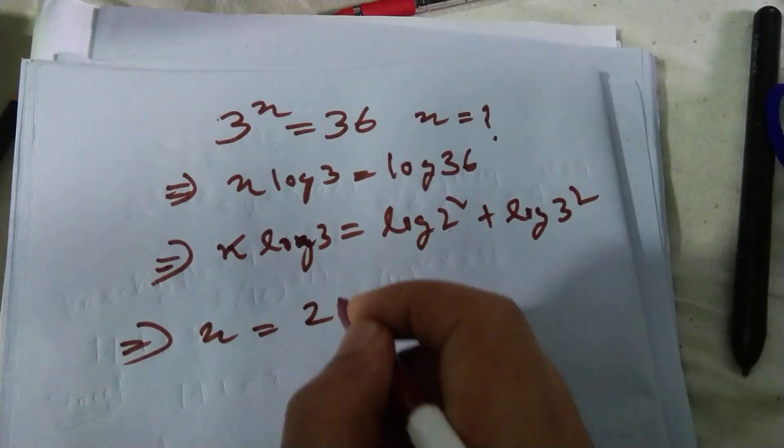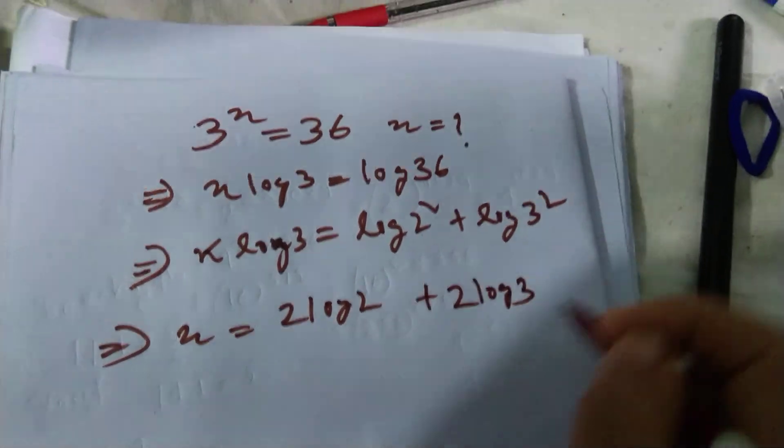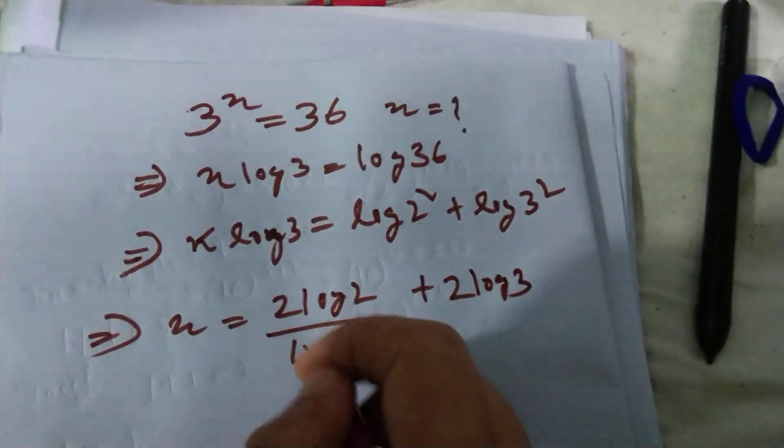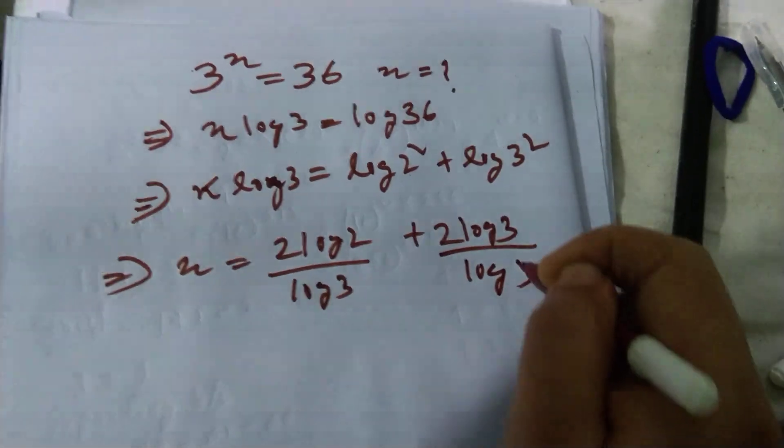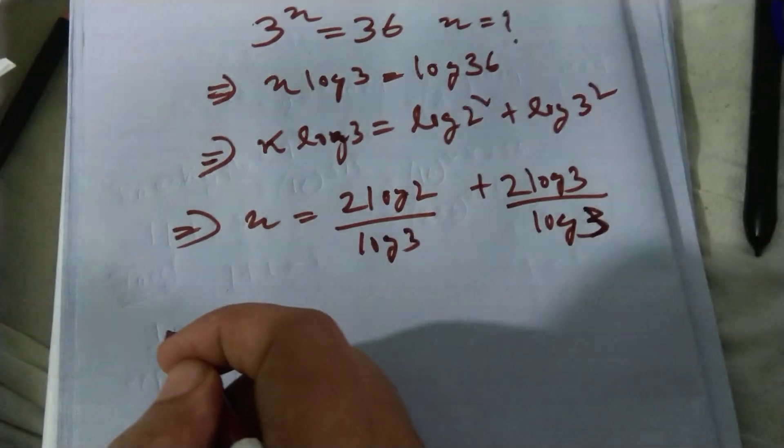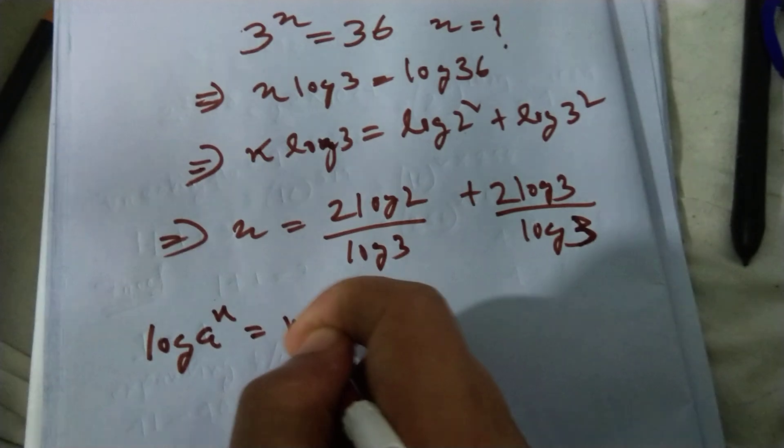It is 2 log 2 plus 2 log 3, divided by log 3. Another factor is that we know log a to the power n equals n log a. This logarithmic property I used here.